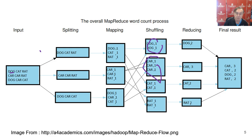That is a reasonably trivial case, but it illustrates the essence of MapReduce — with parallelism, partitioning, the mapping, the sorting and shuffling, the reducing, and then getting the final answer.